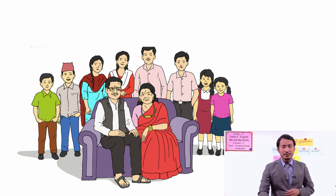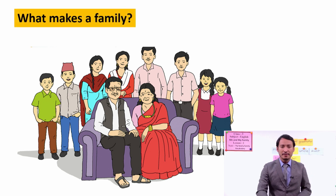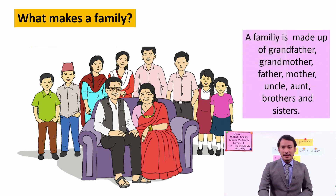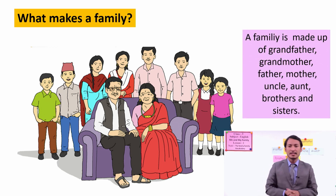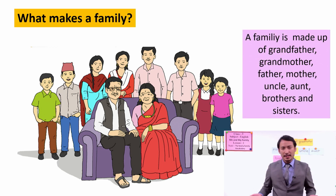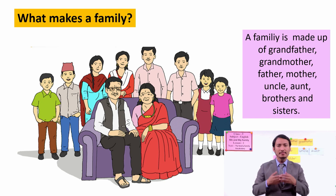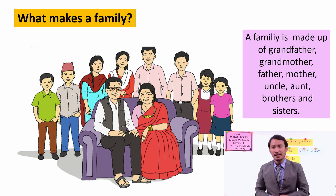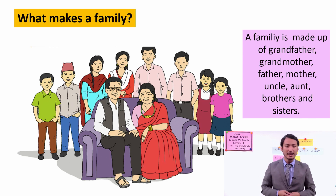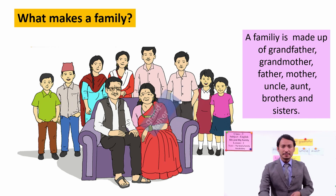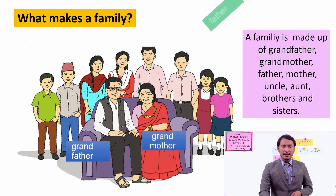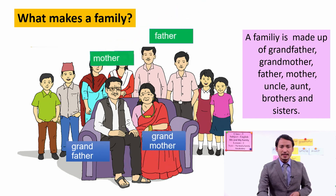Let's again see what were those people in your family. So family is made up of grandfather, grandmother, father, mother, uncle, aunt, brothers and sisters, and you can see their names like this here.